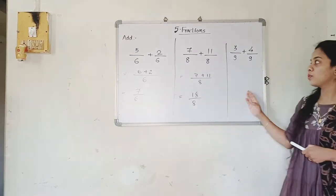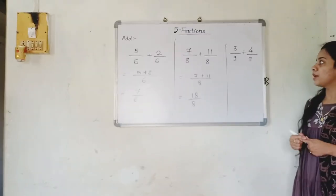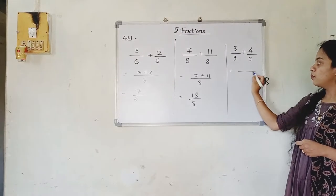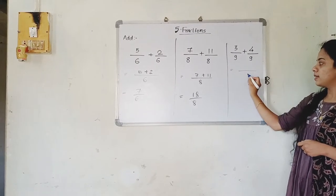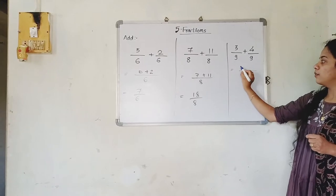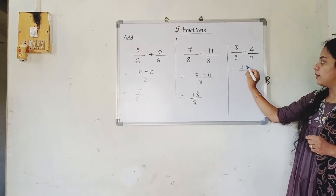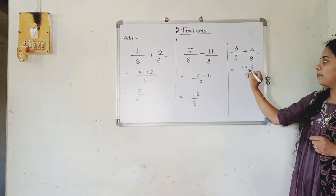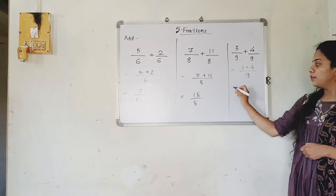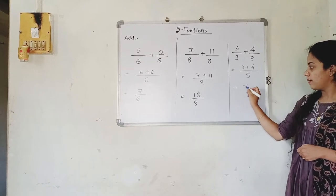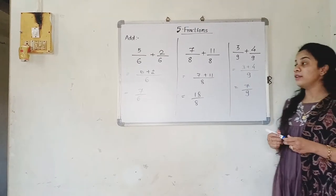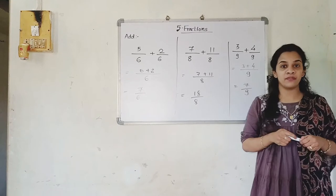The next question is 3 upon 9 plus 4 upon 9. The denominators are the same, so we write it one time. Then 3 plus 4 — why plus? Because there is a plus sign in the middle. 3 plus 4 is 7 upon 9. So this is the addition of like fractions.